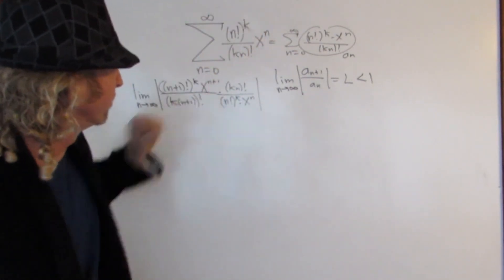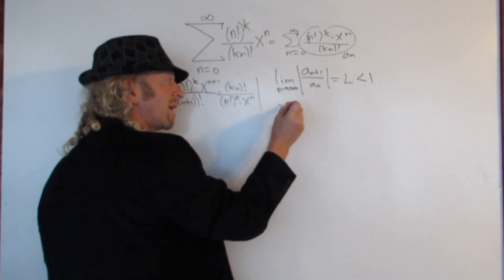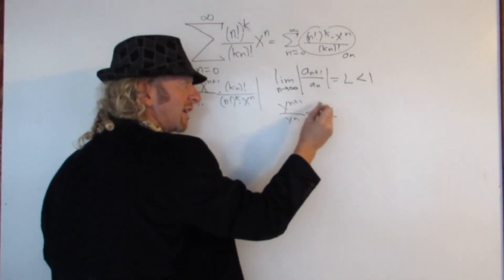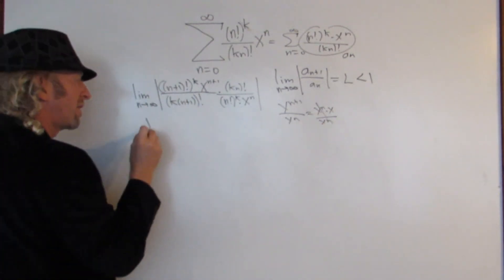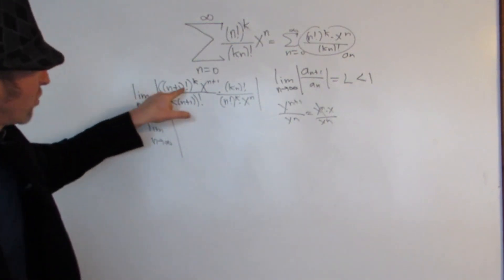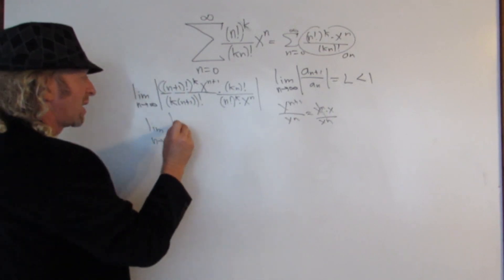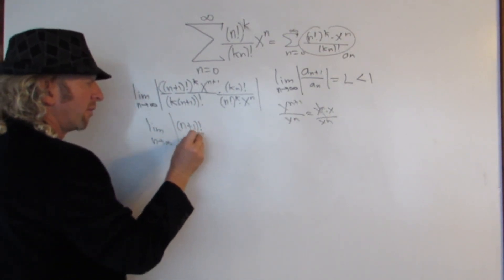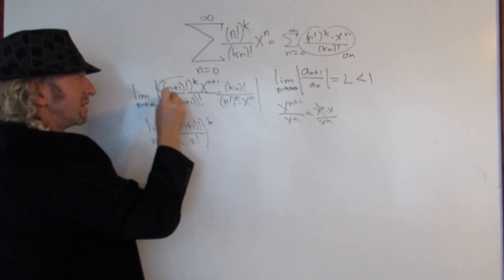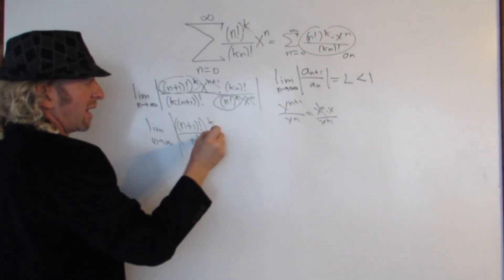We just took a sub n and flipped it. Now let's simplify. The x's will cancel — x to the n plus 1 over x to the n: you can write that as x to the n times x over x to the n, they cancel and you just get x. So we have the limit as n goes to infinity. Here we have n plus 1 factorial to the k and n factorial to the k, which we can write together as n plus 1 factorial over n factorial, all to the k. We've taken care of those, and we have x.